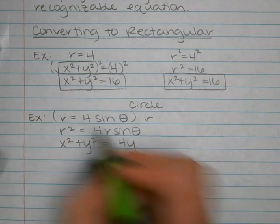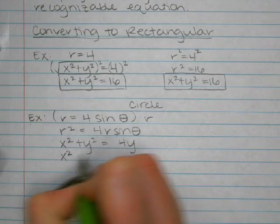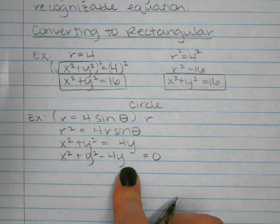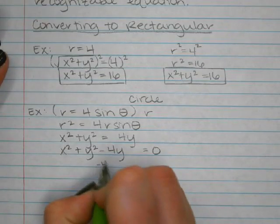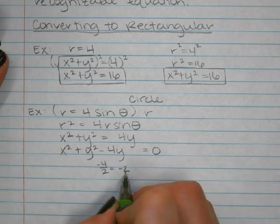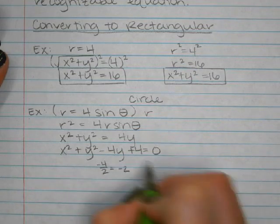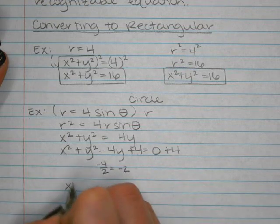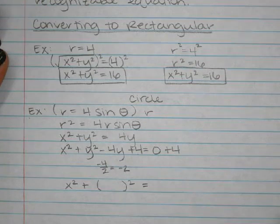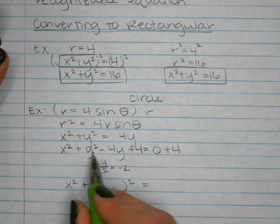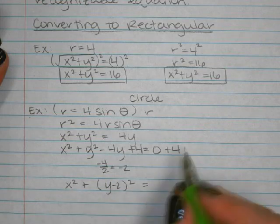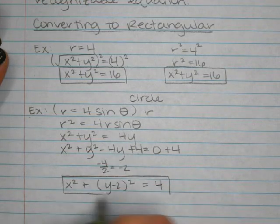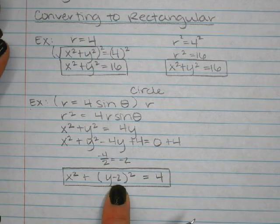Completing the square: x² + (y² − 4y) = 0. Take −4 ÷ 2 = −2, then (−2)² = 4. Add 4 to both sides: x² + (y − 2)² = 4. This is a circle centered at (0, 2) with a radius of 2.